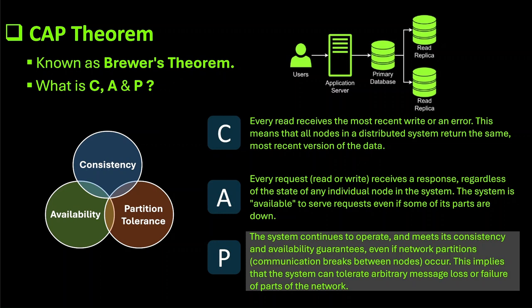Partition tolerance ensures that the system can continue operating correctly in the presence of such partitions. It can tolerate communication breakdowns without leading to a complete system failure. All real-world distributed systems must provide partition tolerance because network failures are inevitable in any networked environment. When a partition occurs, a choice must be made between consistency and availability. A system can either remain available and risk returning inconsistent data, or ensure consistency by potentially becoming unavailable.